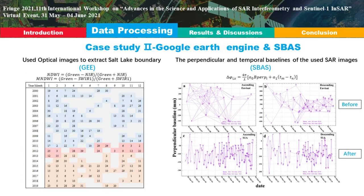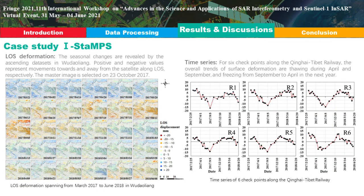For Case Study 2, the Google Earth Engine platform was employed to extract the Salt Lake boundary from January 2000 to September 2019 at monthly scale. Meanwhile, surrounding lake surface deformation before and after the outbursts of Hurleg Lake was retrieved by applying the StaMPS method on Envisat ASAR data from 2003 to 2010 and Sentinel-1 from 2014 to 2019.